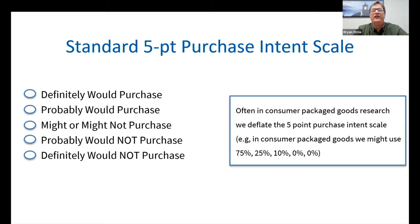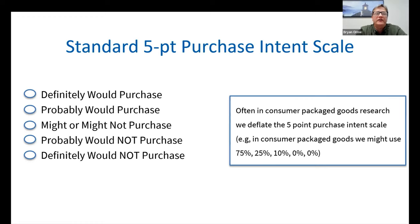Here's that standard five-point purchase intent scale. It typically runs from 'definitely would purchase' to 'definitely would not purchase.' In consumer packaged goods research, we deflate the scale by multiplicative factors — for example, taking 75% of the top box (definitely would purchase), 25% of the second box (probably would purchase), and 10% of the middle box (might or might not purchase). Let me show an example of that.